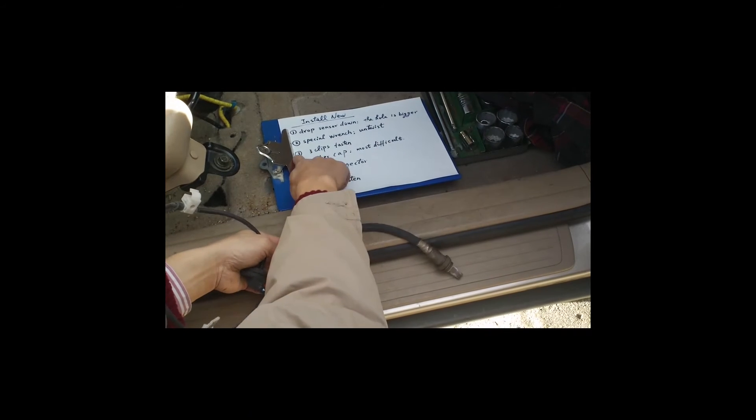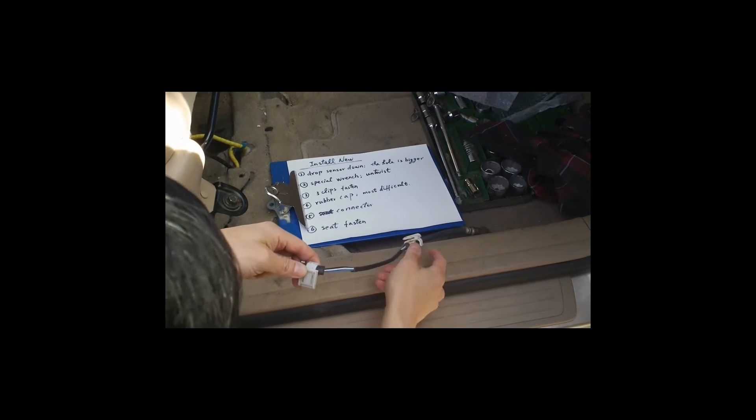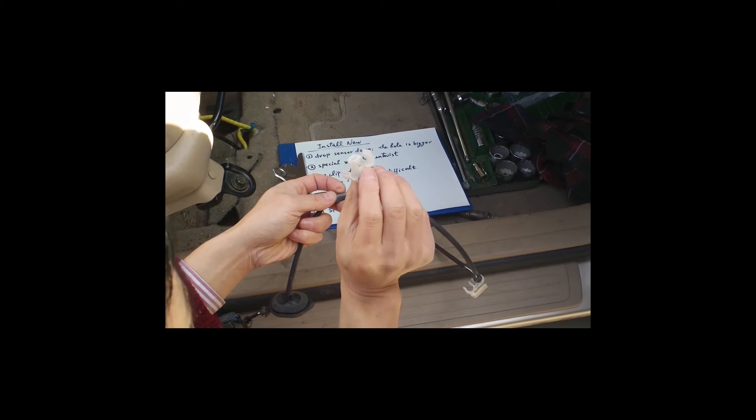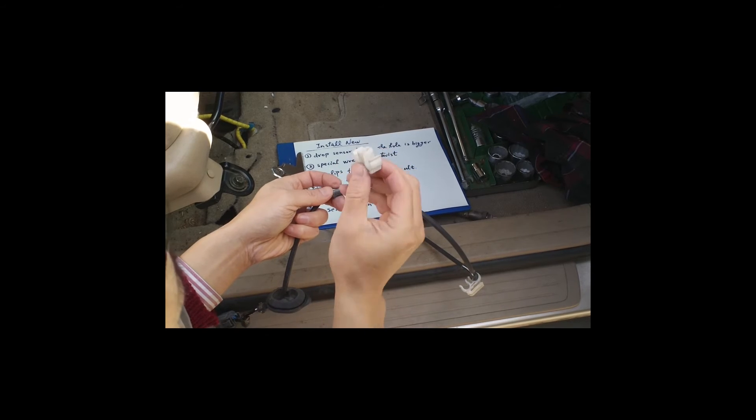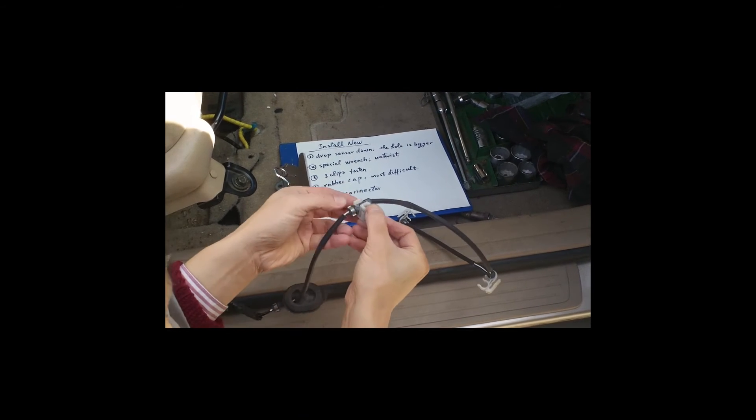The next step is number three. Those are the clips. The first two, pretty easy. It will snap on. The third clip, you have to first screw on a bolt like this. And afterwards press it in a secure place like this.